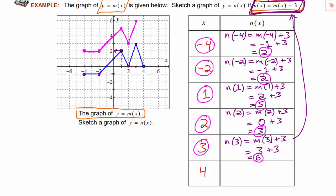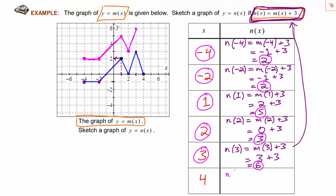Finally, we can put 4 into the function. n of 4 is defined to be m of 4 plus 3. Looking at the graph of m, when x is 4 the output is 0. Adding 3 to that result gives us 3. So when x is 4, y is 3, and we get the ordered pair 4 comma 3. We plot that and connect our adjacent dots, and now we've got a graph of n of x, where n of x is m of x plus 3.